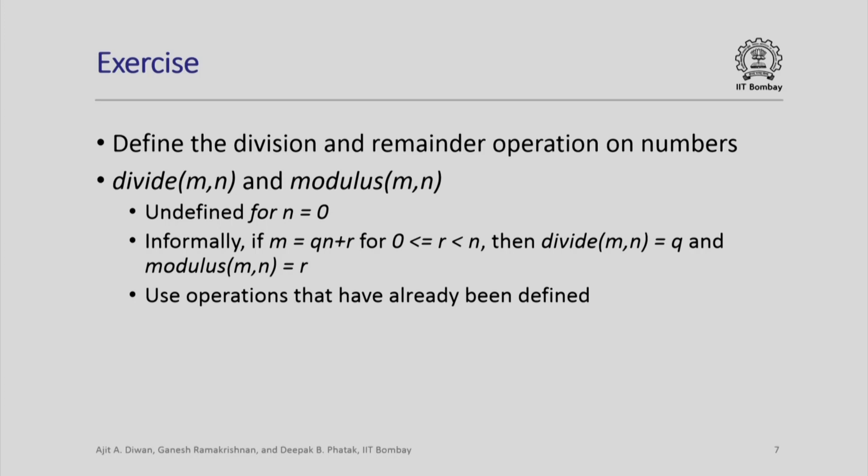Informally we know what integer division and remainder mean — we write m as q times n plus r — but how will you write a formal definition for these? Try to think over this; we will see more examples of such definitions later. When you increment m by 1, what happens to the modulus, what happens to the remainder, and what happens to the divide operation? Assuming modulus is defined for m and n, how do you define the modulus for next m and n? The hint is: it will increase by 1 or it will go back to 0. Similarly, the quotient will increase by 1 maybe, or it will remain the same. You need to know when it remains the same and when it increases by 1. Try to think over this and we will look at more examples later. Thank you.